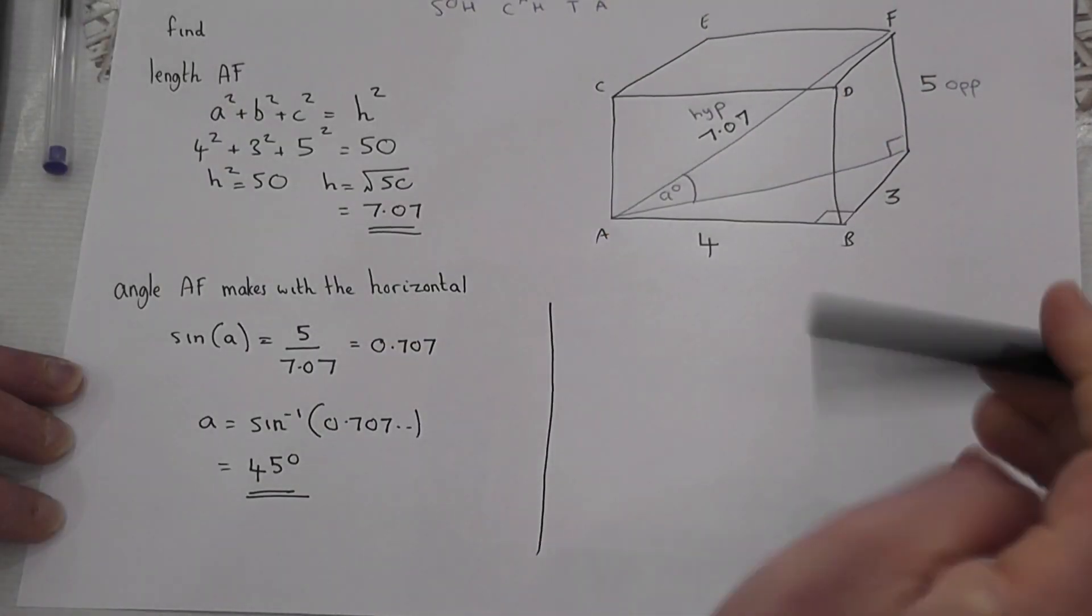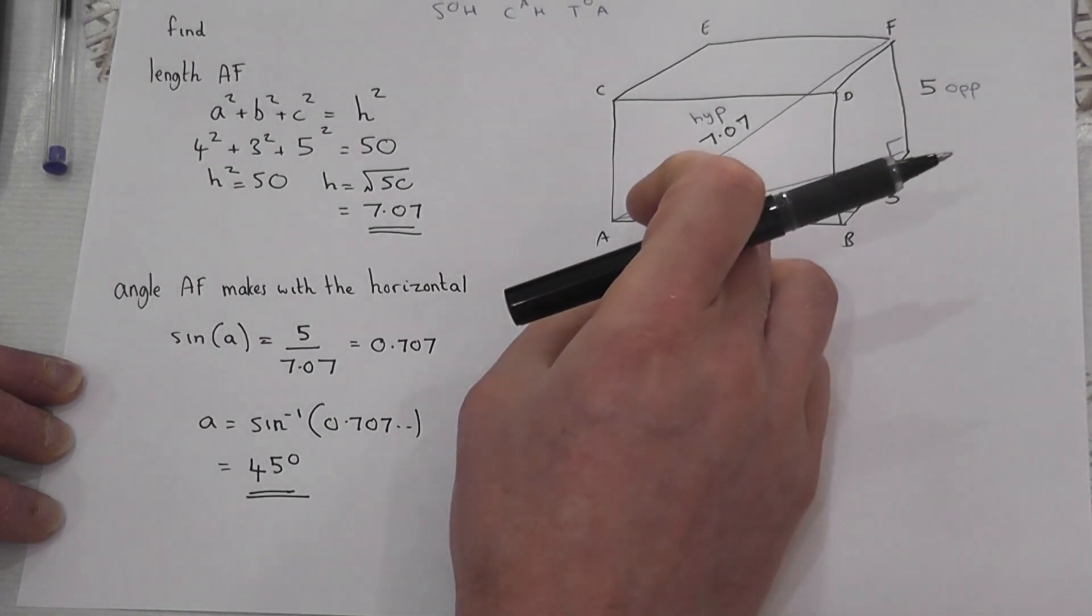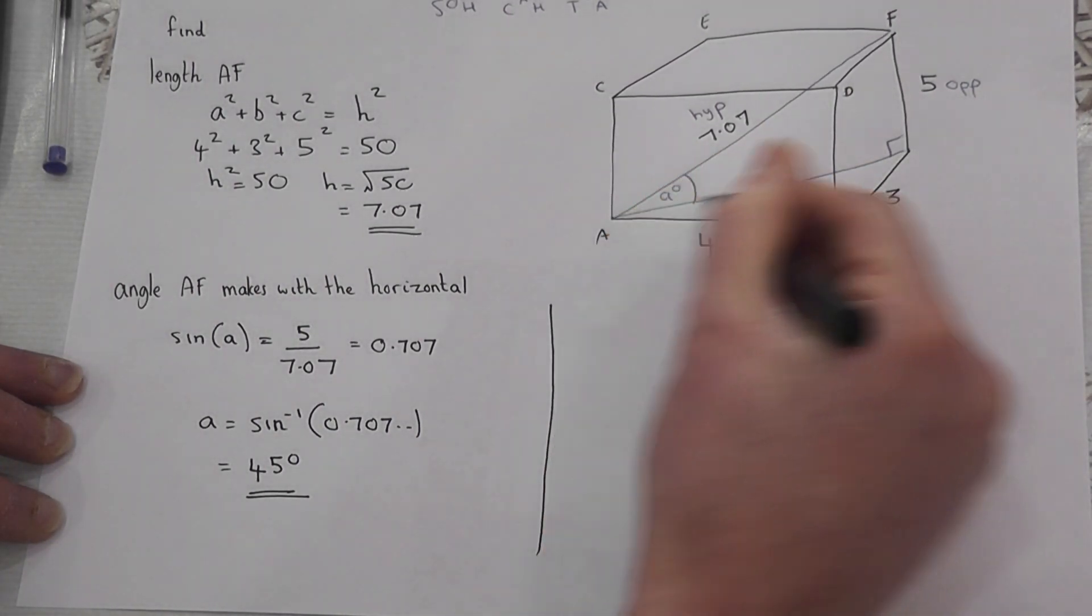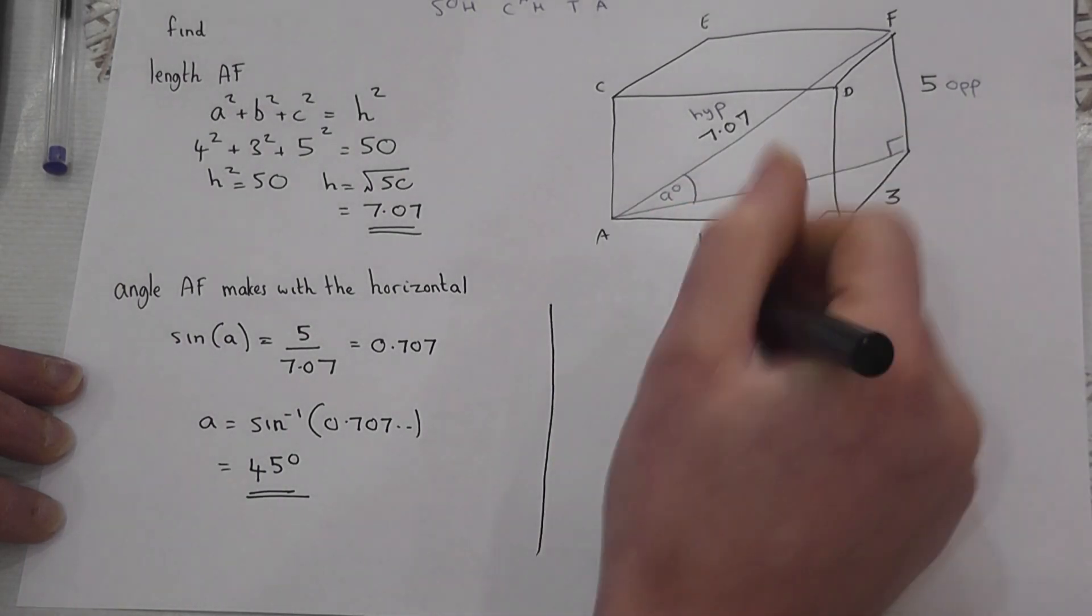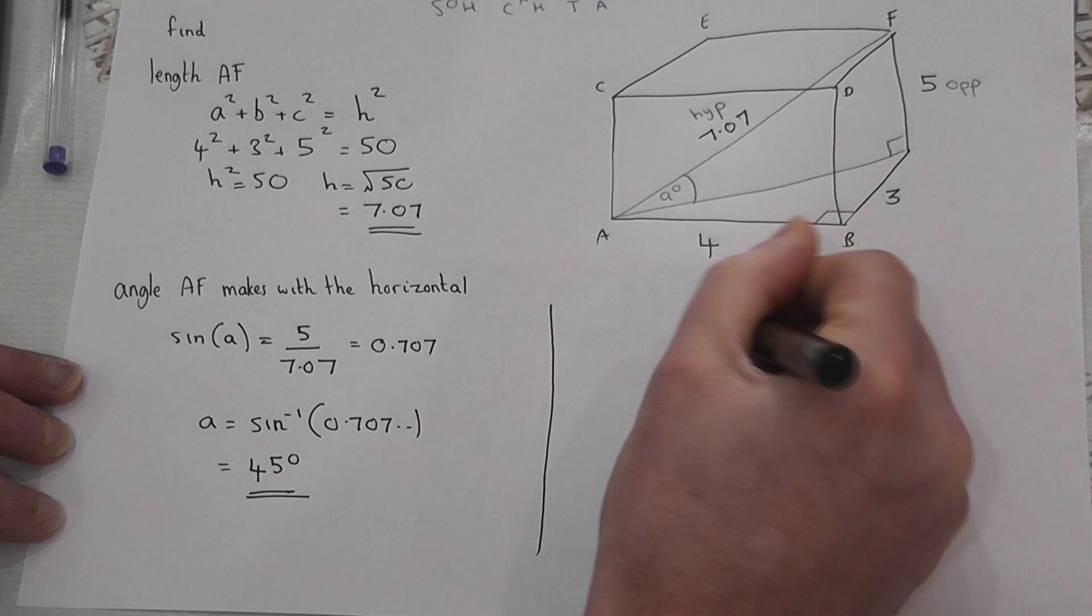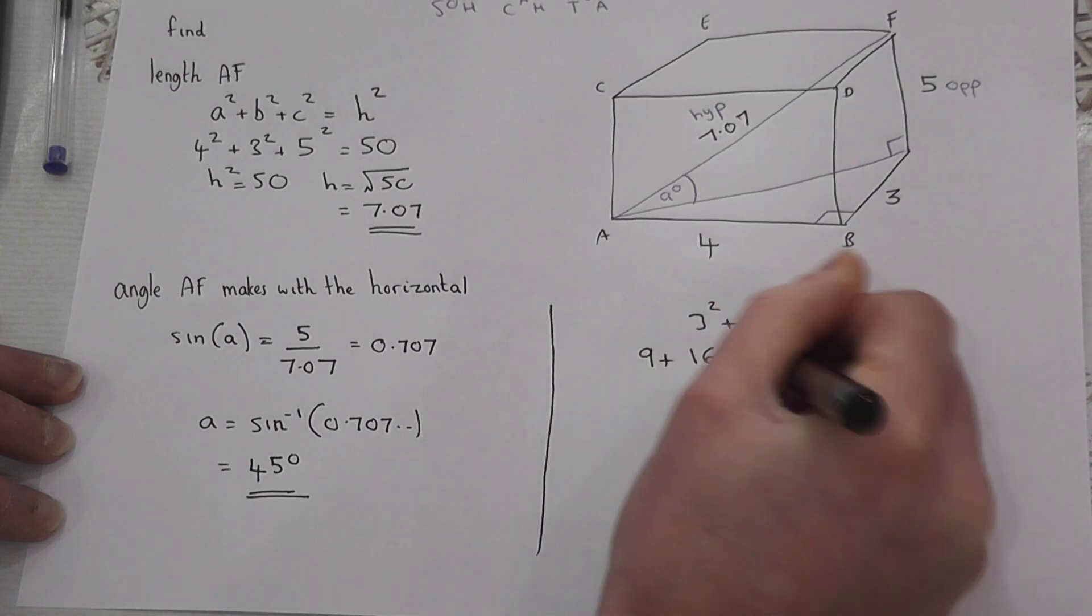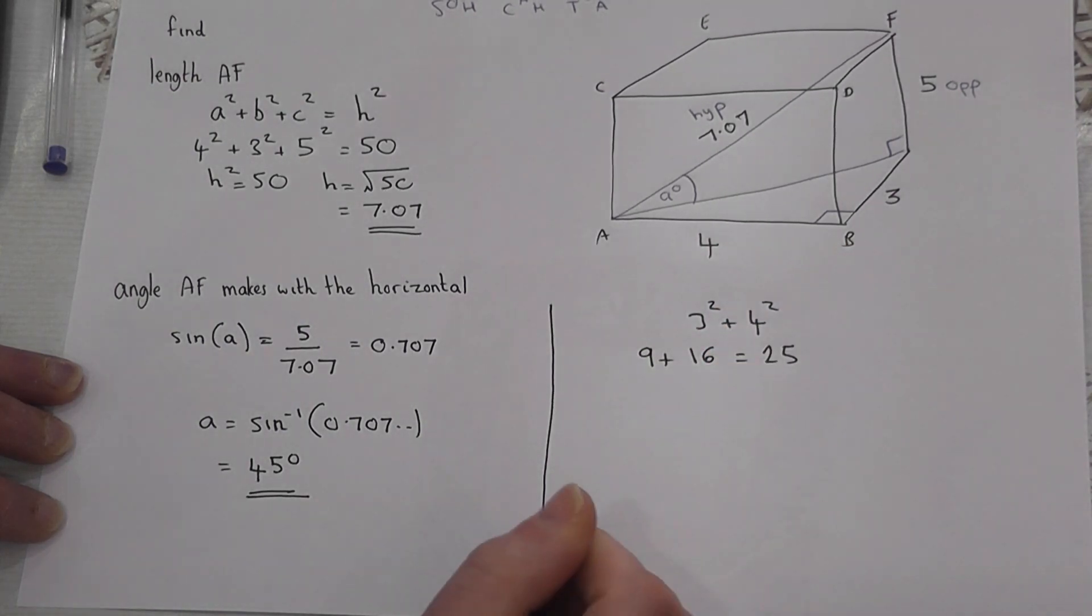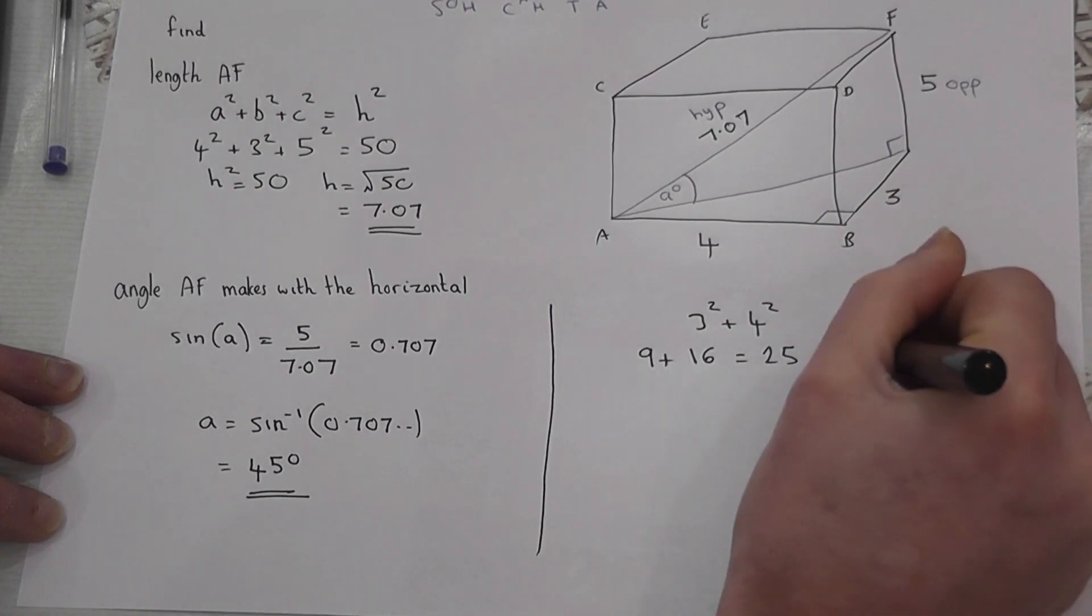So I can use just 2D Pythagoras to find the angle. This length here: if I do 3² + 4², which is 16 + 9, equals 25. So this length is the square root of 25, which is just 5.